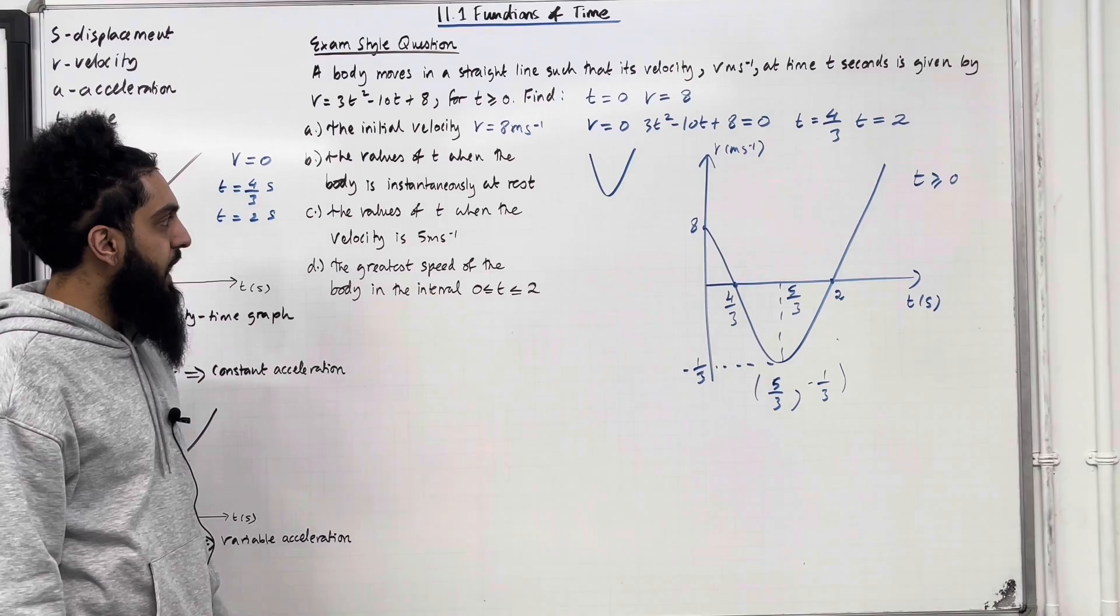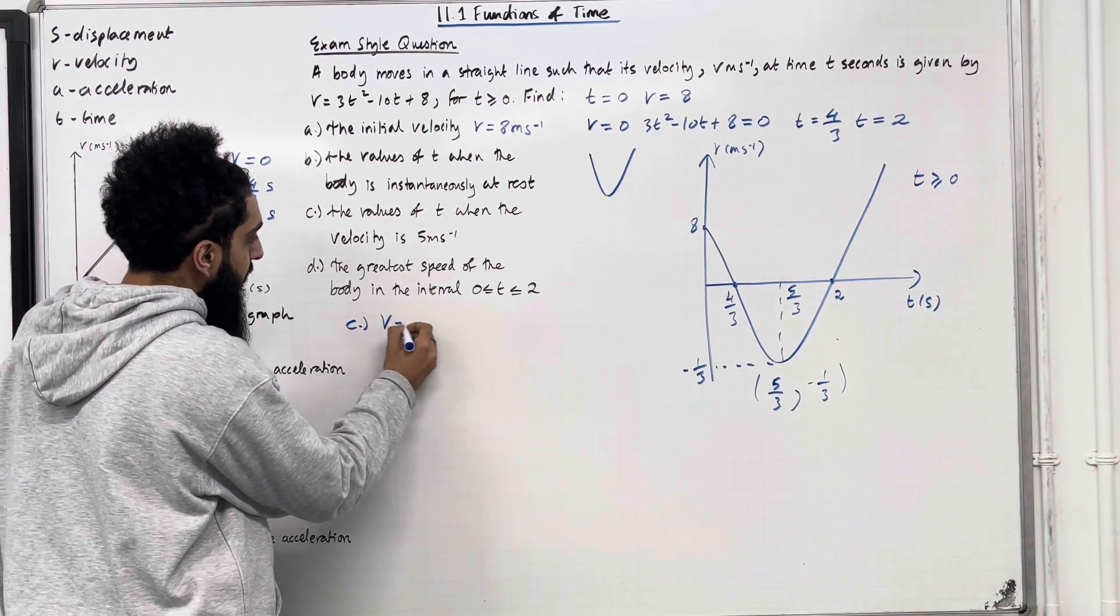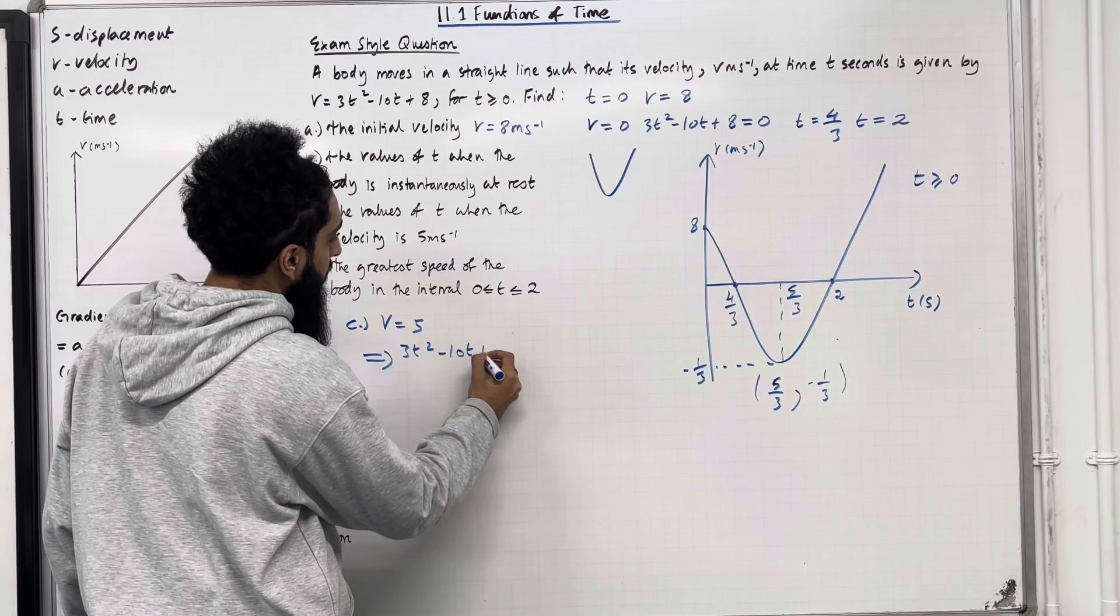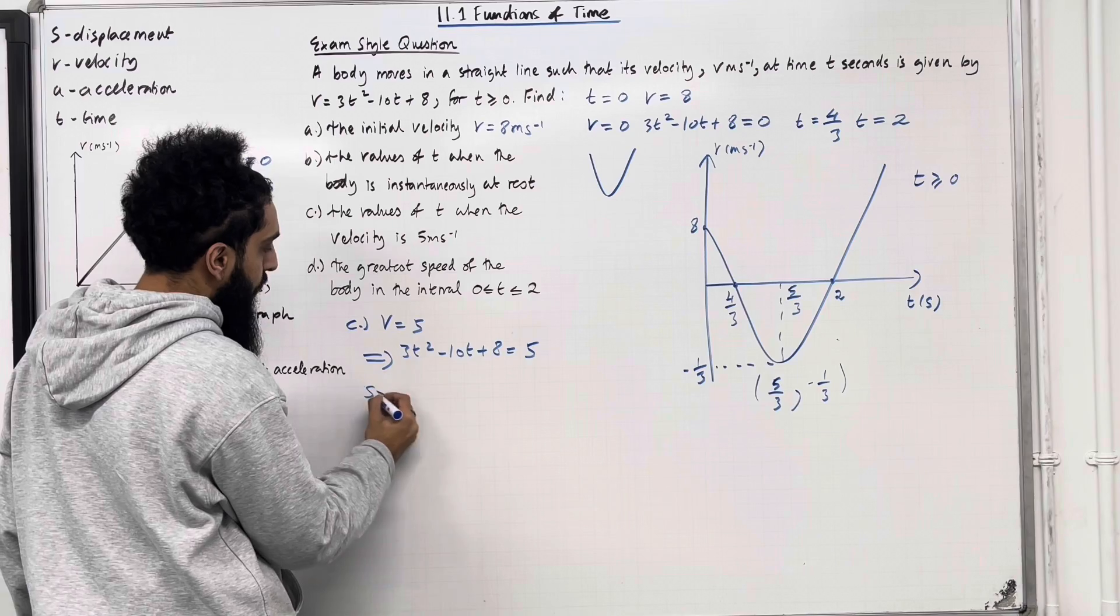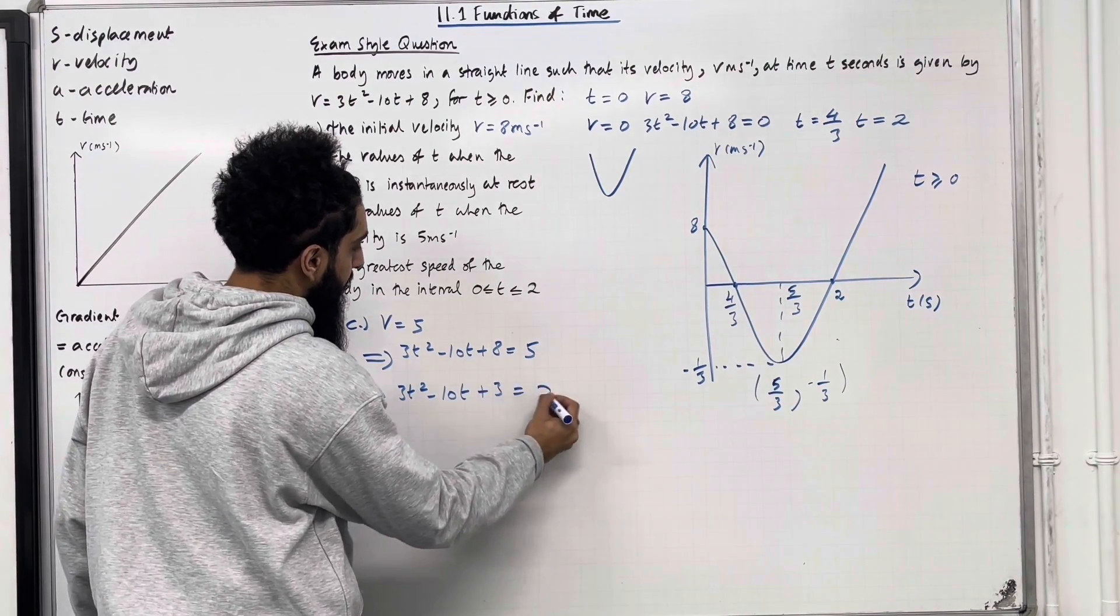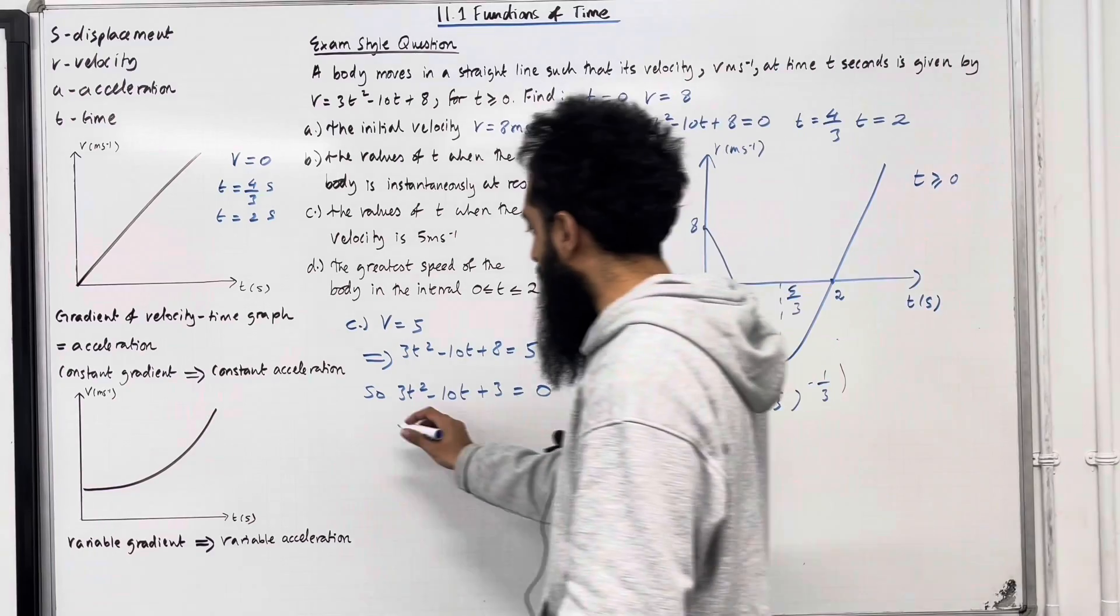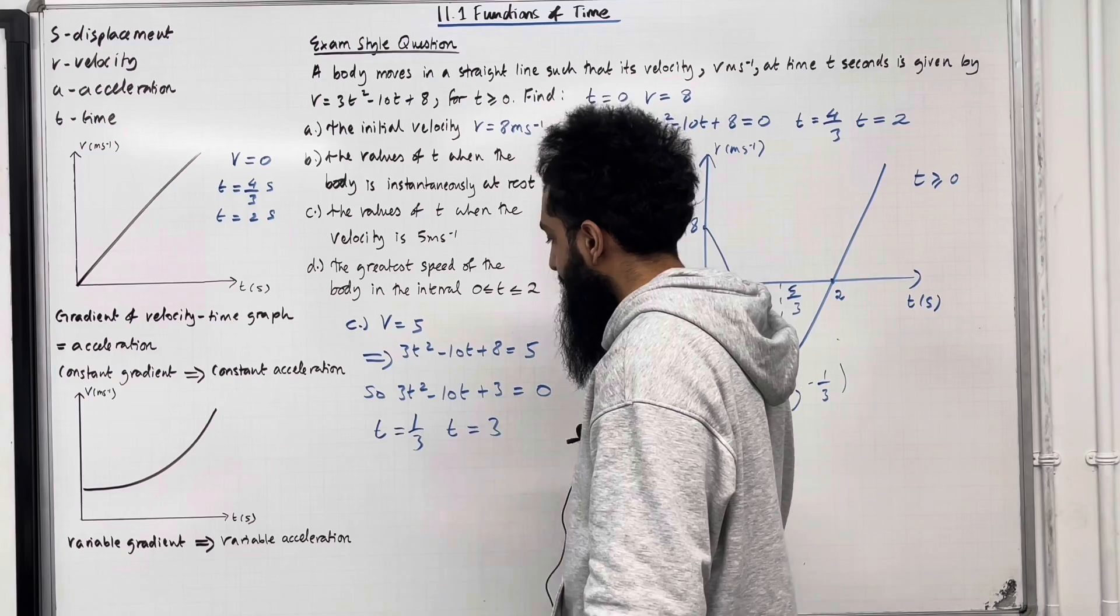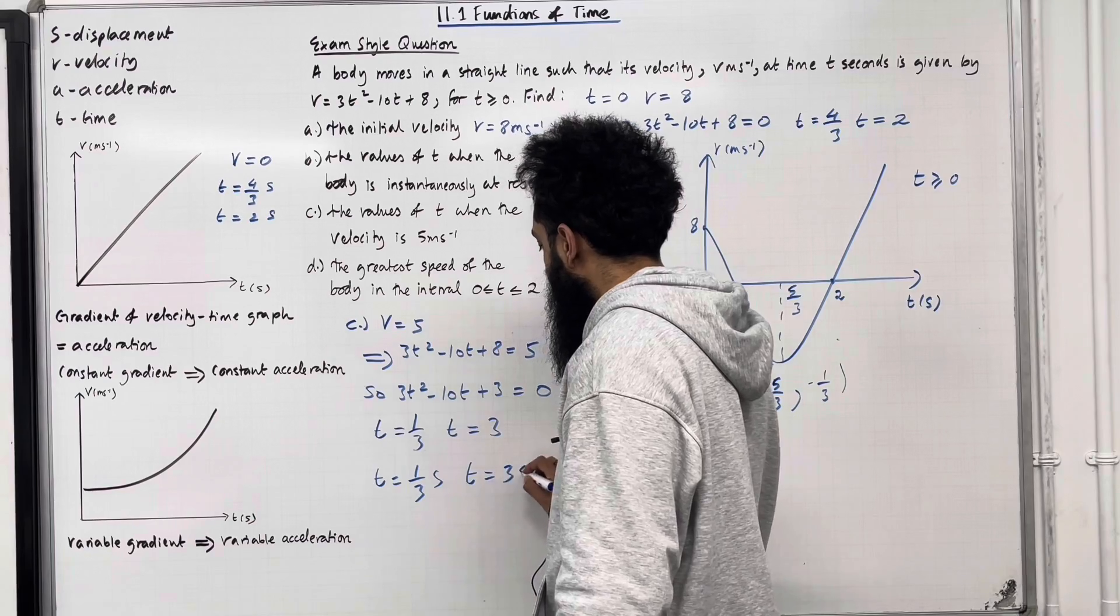Part C, the values of t when the velocity is 5 meters per second. So in part C, we want v equal 5. This implies that we've got 3t squared minus 10t plus 8 equal to 5. Take the 5 to the left-hand side. So we have 3t squared minus 10t plus 3 equal 0. I can solve this quadratic equation. So if I solve this, I get t equal 1 third and t equal 3. Okay, so we have t equal 1 over 3 seconds and we have t equal 3 seconds.